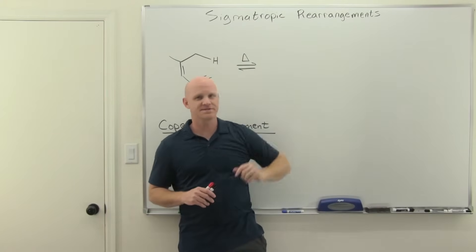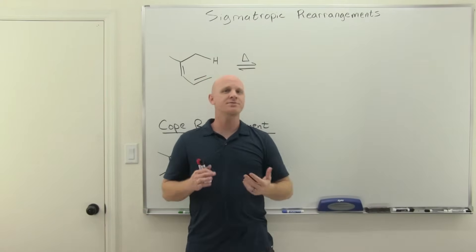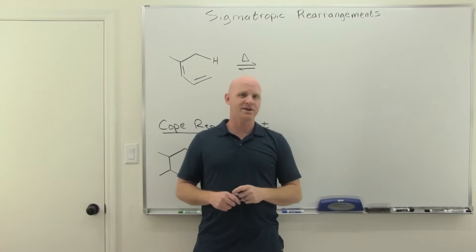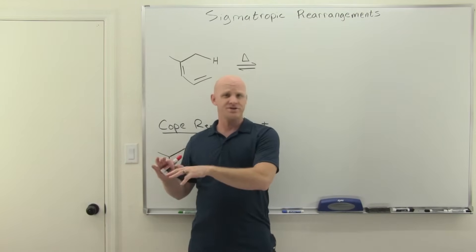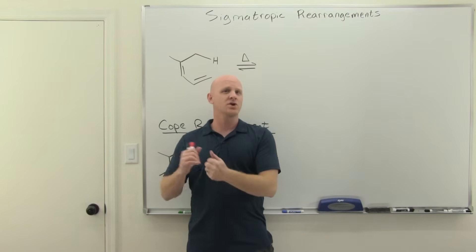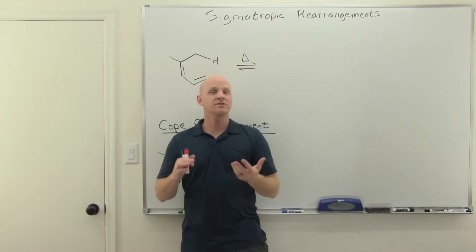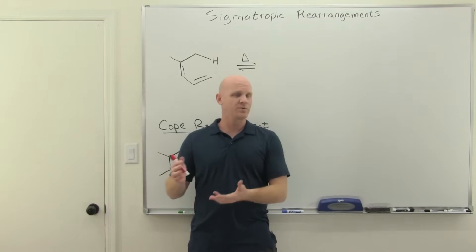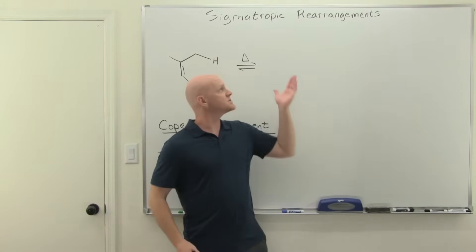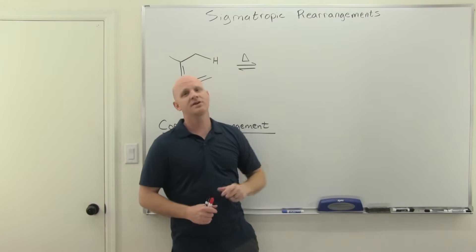Sigma-tropic rearrangements are the last of our three pericyclic reactions. We've already covered cyclo-addition reactions like the Diels-Alder, and we've already covered electrocyclic reactions — ring openings and ring closures. So this is the last one we've got left to go.